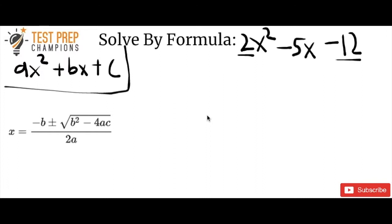So go ahead, pause the video, and try this out. Okay, so hopefully you just had a chance to pause the video and try this, but if not, that's okay. We'll go through it. So the two things that you need to know here is that 2x squared minus 5x minus 12 is a quadratic equation. It's not something that you can do by trying to rearrange this and get x by itself — you can't do it unless you use these two methods.